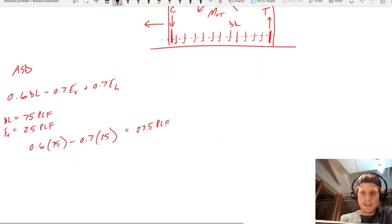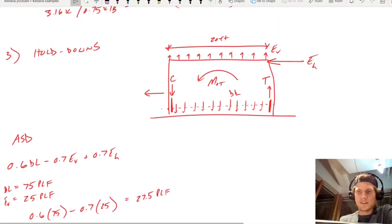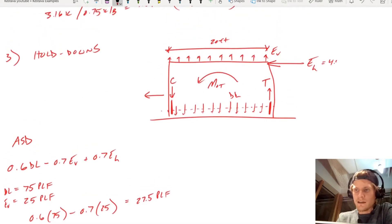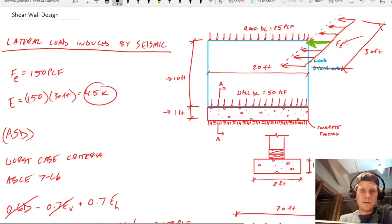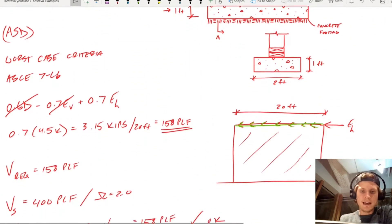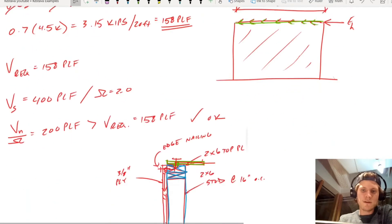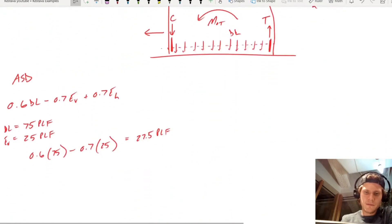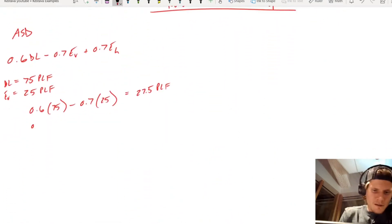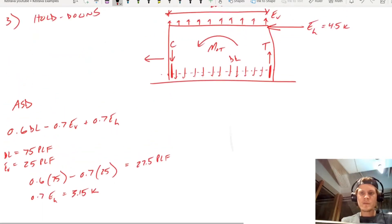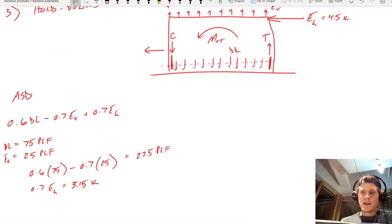That is going to get us an effective downward dead load of 27.5 plf. And then obviously Eh is 0.7 of what do we say, was it 4.5 kips? So 0.7 of 4.5 is 3.15 kips. So 0.7 Eh equals 3.15 kips.